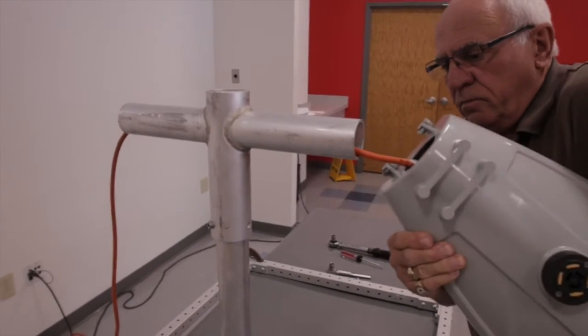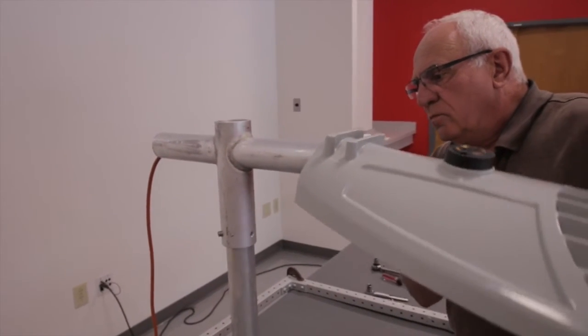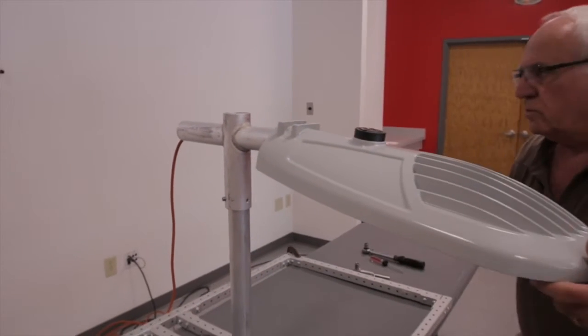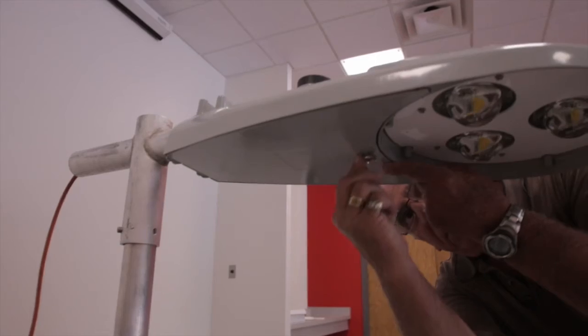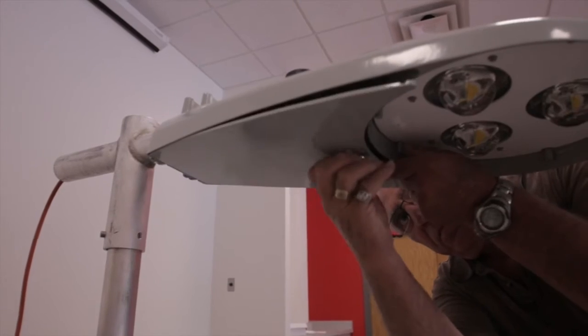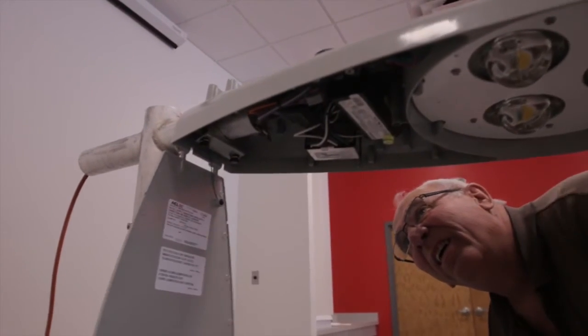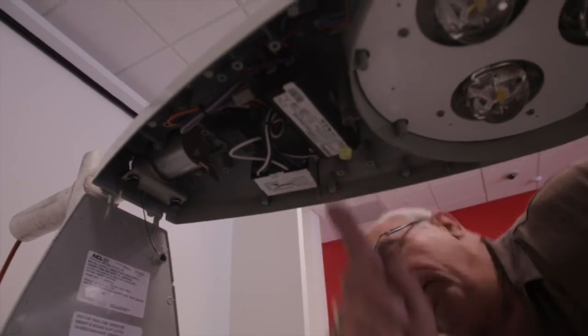Ensure the power has been disconnected, then feed the electrical wires through the opening and lift the luminaire back onto the arm until it stops. Next, loosen the wing screw and open the electrical access door. Check the bubble level to ensure the luminaire is level.